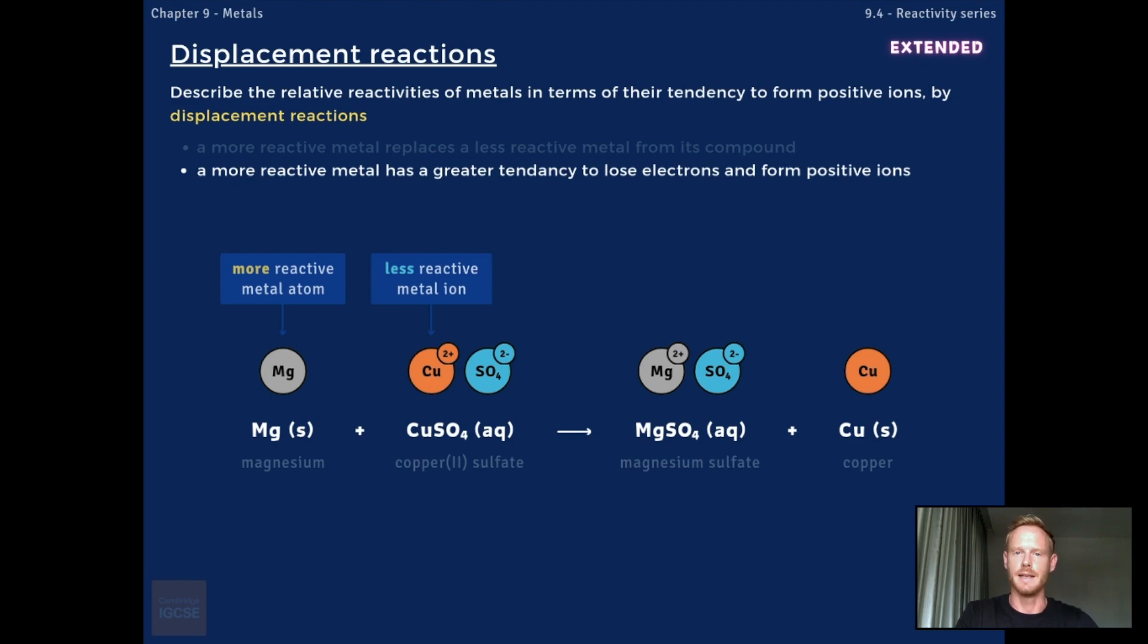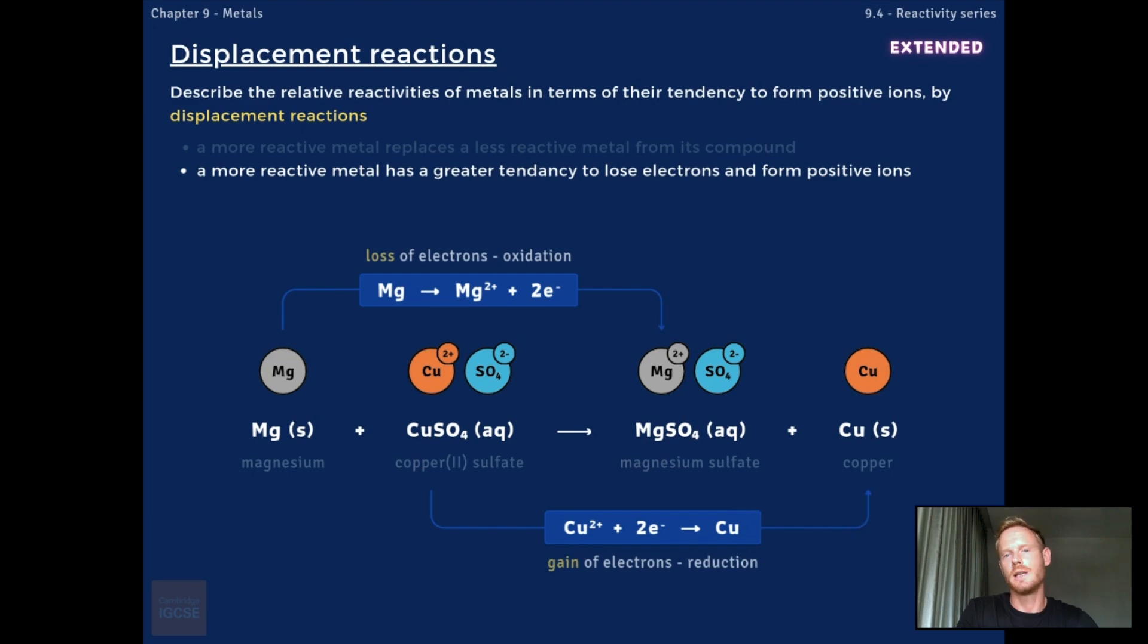For example, magnesium is more reactive than copper, so it loses electrons more readily than copper. Therefore, when magnesium metal is added to aqueous copper sulfate, magnesium atoms lose electrons to form positive ions, which take their place in the compound. At the same time, the positive copper ions gain electrons to form neutral copper atoms.